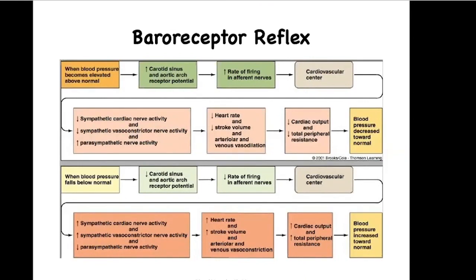Keep in mind that baroreceptors are stretch receptors, and what will stimulate them is an increase in blood pressure. When blood pressure becomes elevated above normal, the stretch receptors will fire — the carotid sinuses and the aortic arch receptors, your baroreceptors. That information will be sent by way of afferent nerves to the cardiovascular center. Since blood pressure is elevated, we'll need to decrease sympathetic input to the SA and AV nodes, the myocardium, and decrease sympathetic input to the blood vessels.